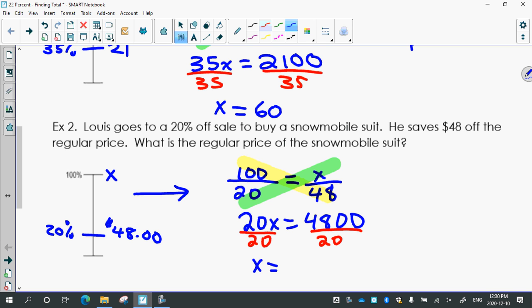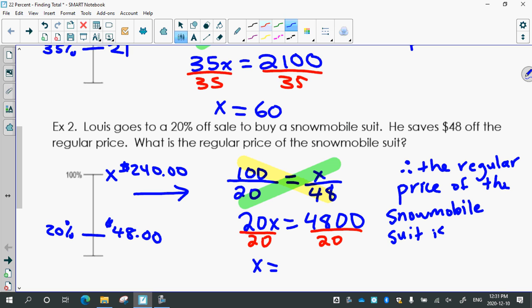Then always see if your answer makes sense for the question. You should be doing that with the ones we just did as well. So that means that the original price of the snowmobile suit was $240. Again, halfway mark would be $120. $48 below that, so it makes sense. Therefore, the regular price of the snowmobile suit is $240.